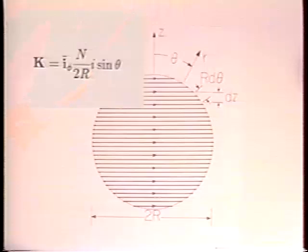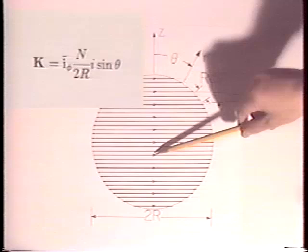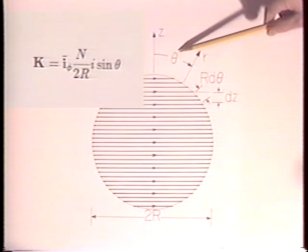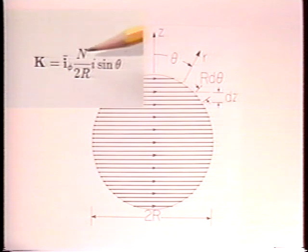Here's the coil in cross-section. With the neglect of the slight pitch in the turns, the winding is uniformly distributed from north to south. The diameter is 2R. With each turn carrying the current I, the surface current density is sinusoidally distributed with respect to theta. On the surface of the sphere, the surface current density varies with the sine of theta and is proportional to I. N is the number of turns.